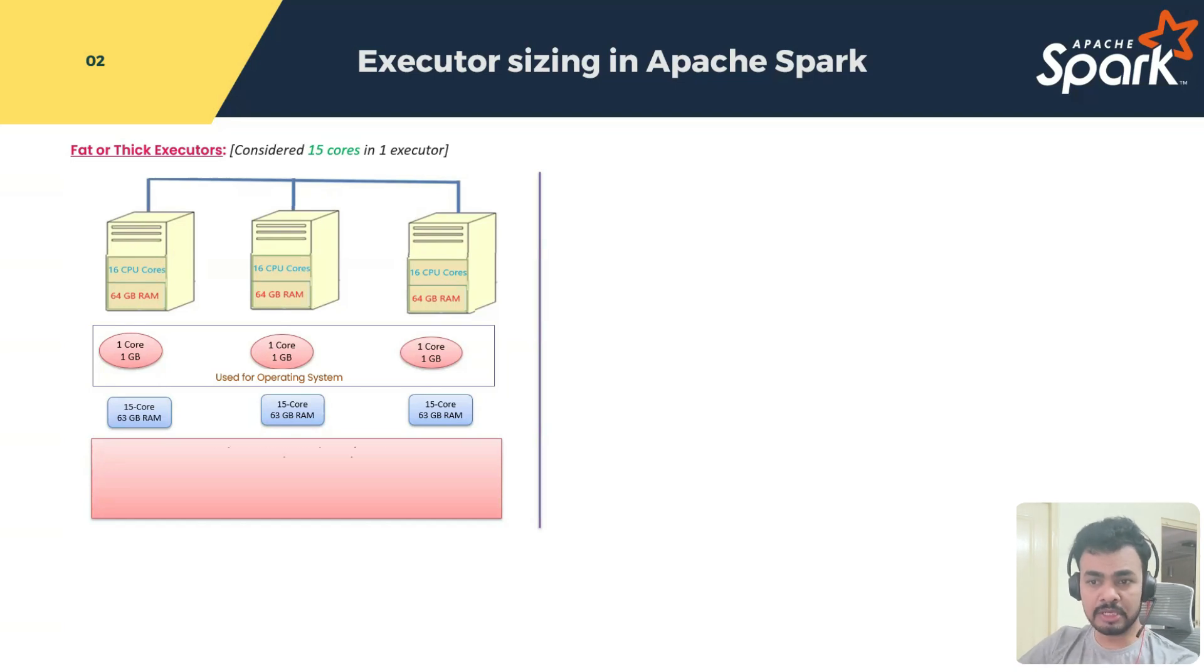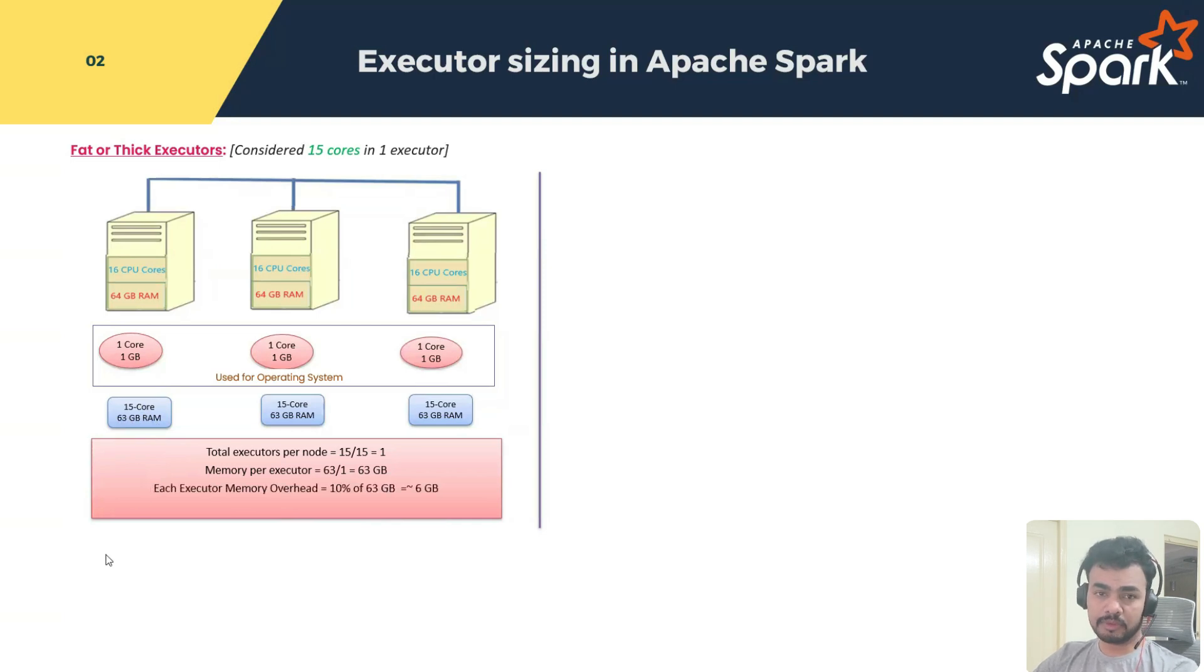Let's move and see the calculation. Total executor per node, only one. I am assuming only one. If you see the headline, I consider 15 cores in one executor, which means 15 cores are here, each node having only one executor. Now, memory per executor is equal to 63 GB only, because entire 63 GB is assigned to one executor. Now, we learned how to calculate the memory overhead. Memory overhead is 384 MB or 10% of executor memory, whichever is higher.